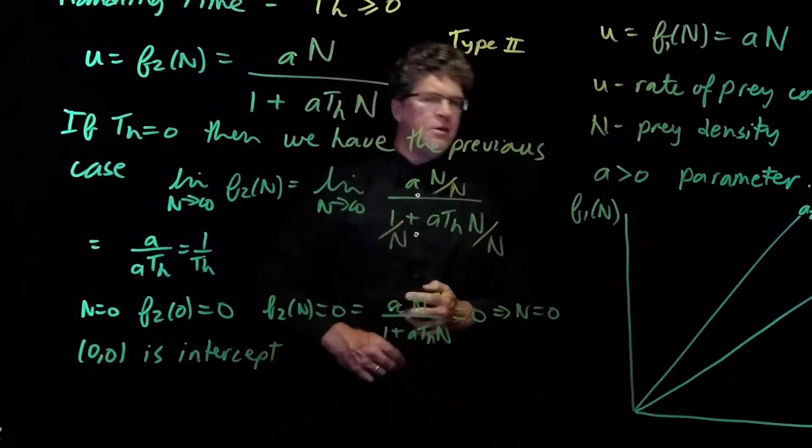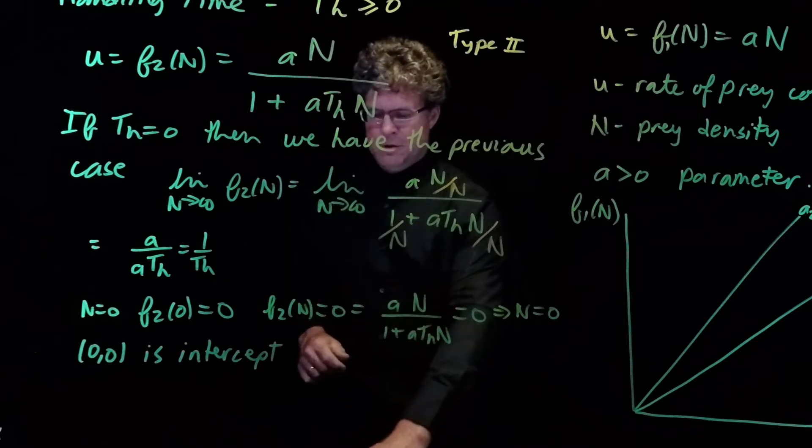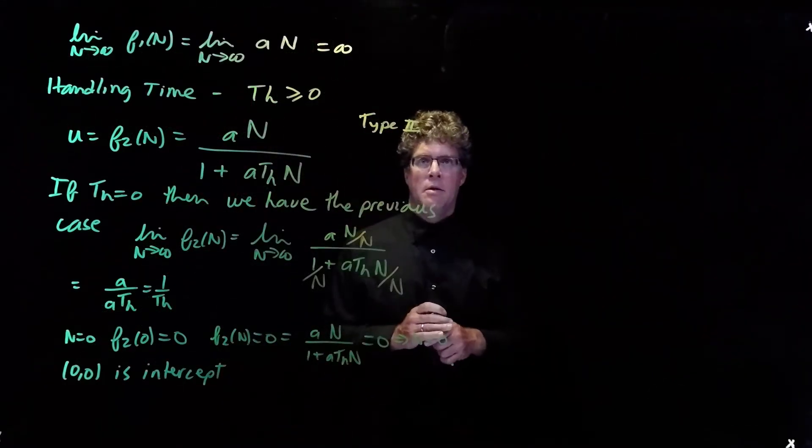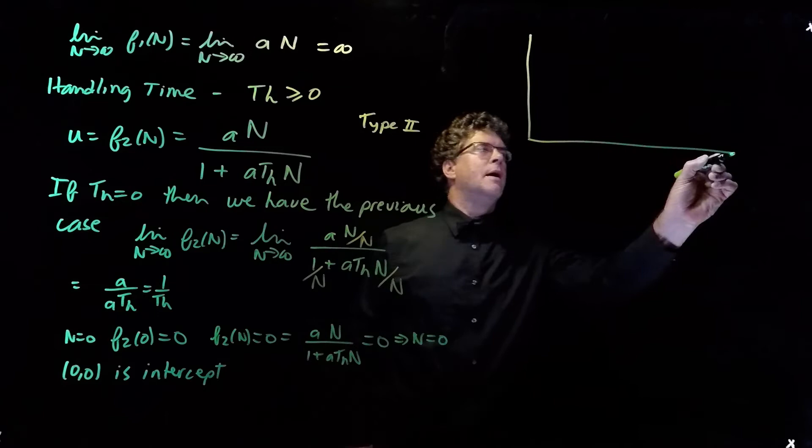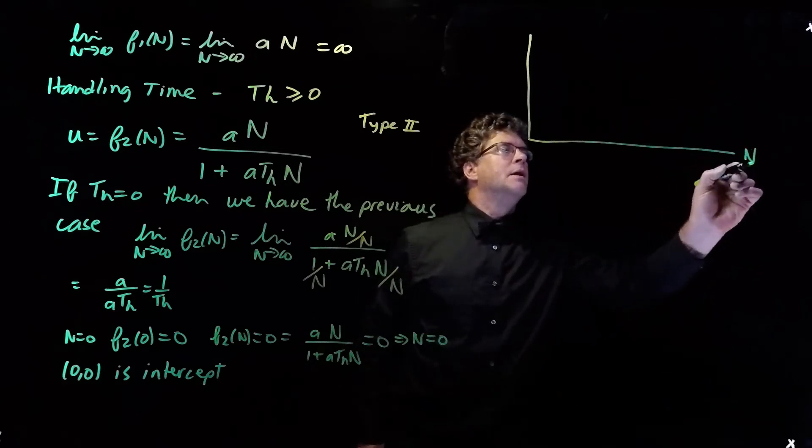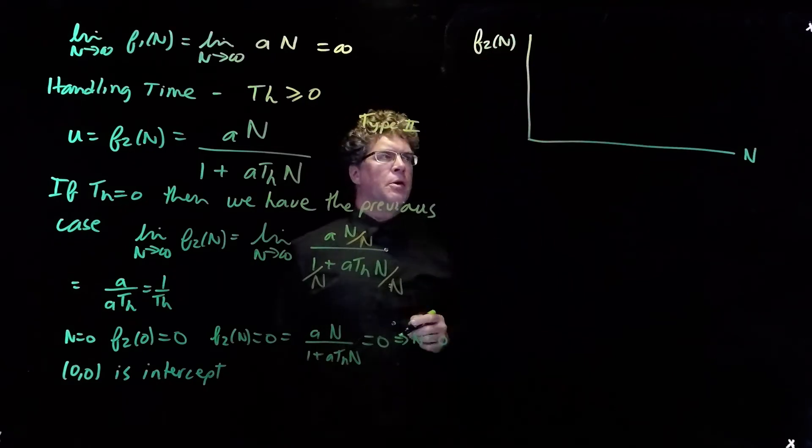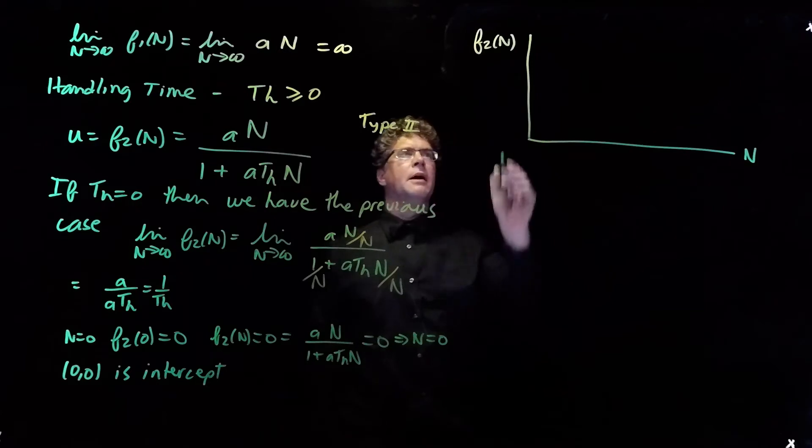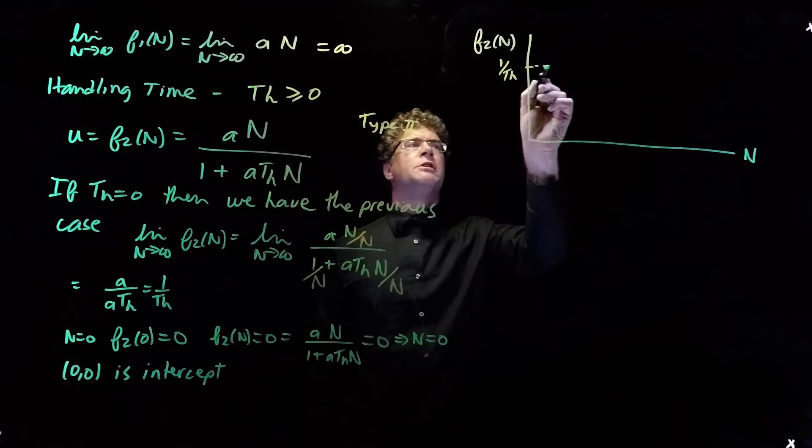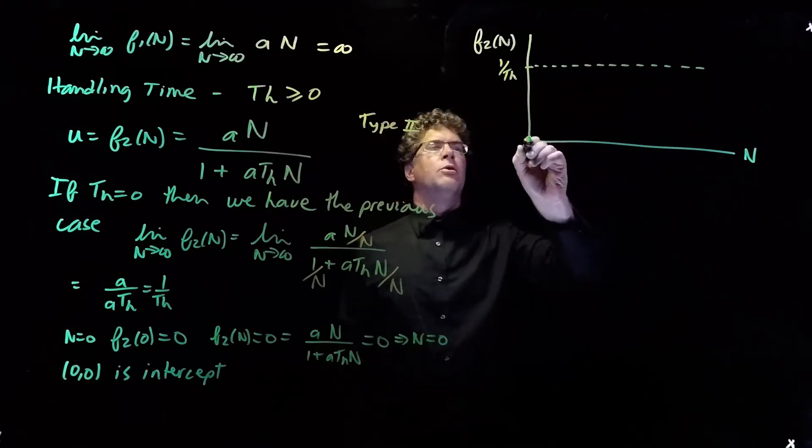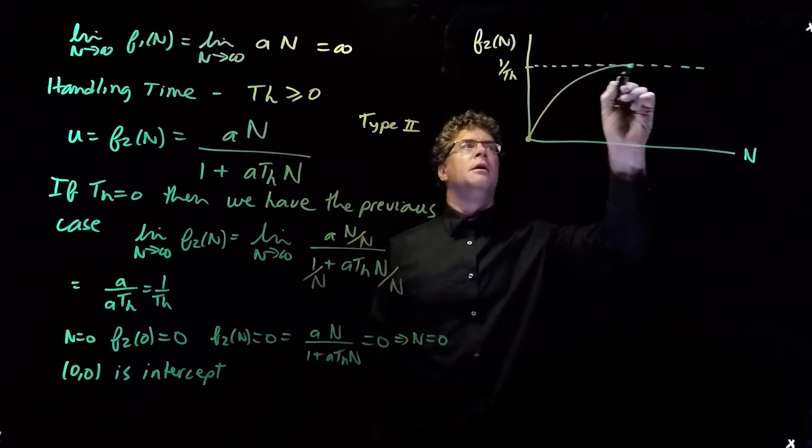Okay. So, we'd like to be able to plot this graph, and that's the next thing that we're going to do. The graph of the type 2 functional response has n on the horizontal axis, and it has f2 of n on the vertical axis. And we can put in the horizontal line 1 over T sub h. And we know that the function goes through 0, 0.